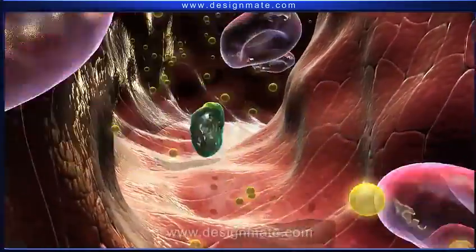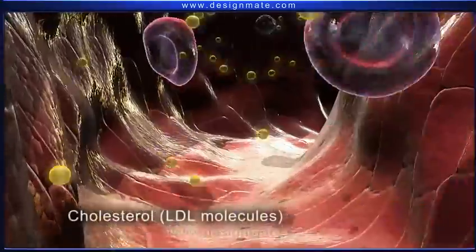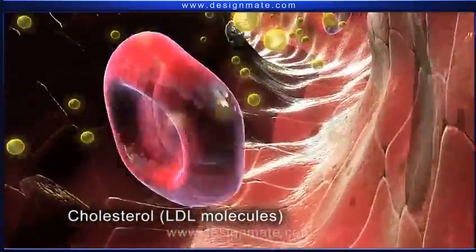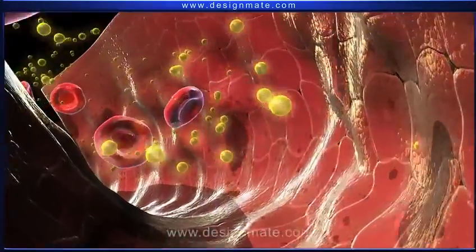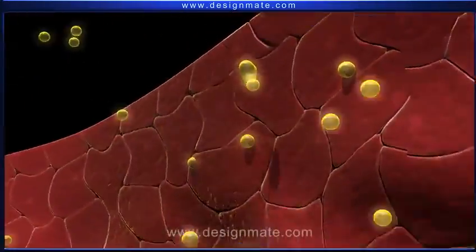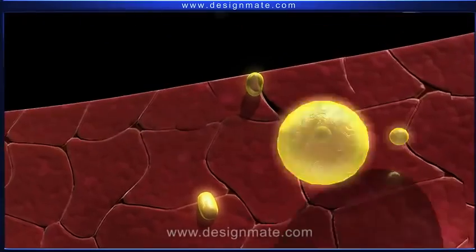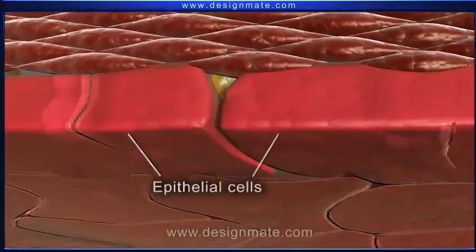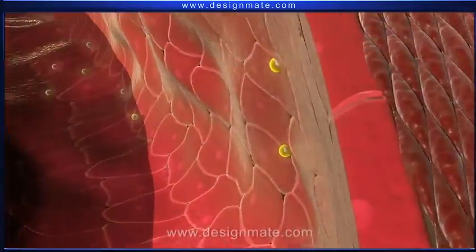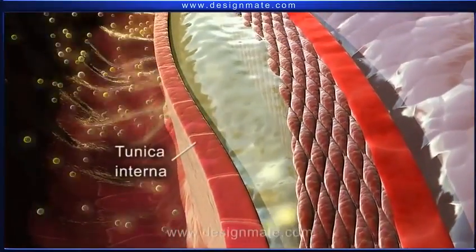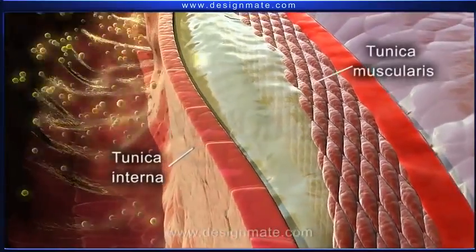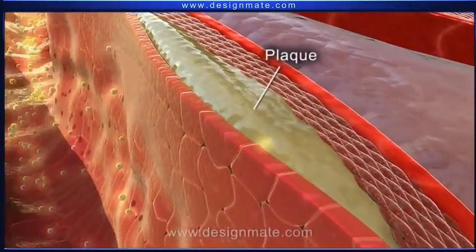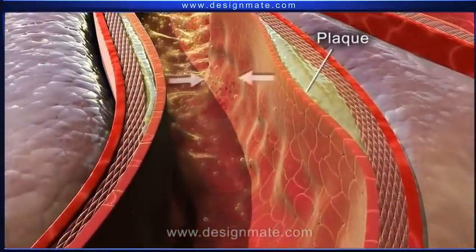When the blood carries a higher level of cholesterol in the form of LDL molecules for a longer period of time, these cholesterol molecules tend to settle on the surface of the artery. Here they are absorbed through the epithelial cells and form a layer between the tunica interna and tunica muscularis. This layer is called the plaque.